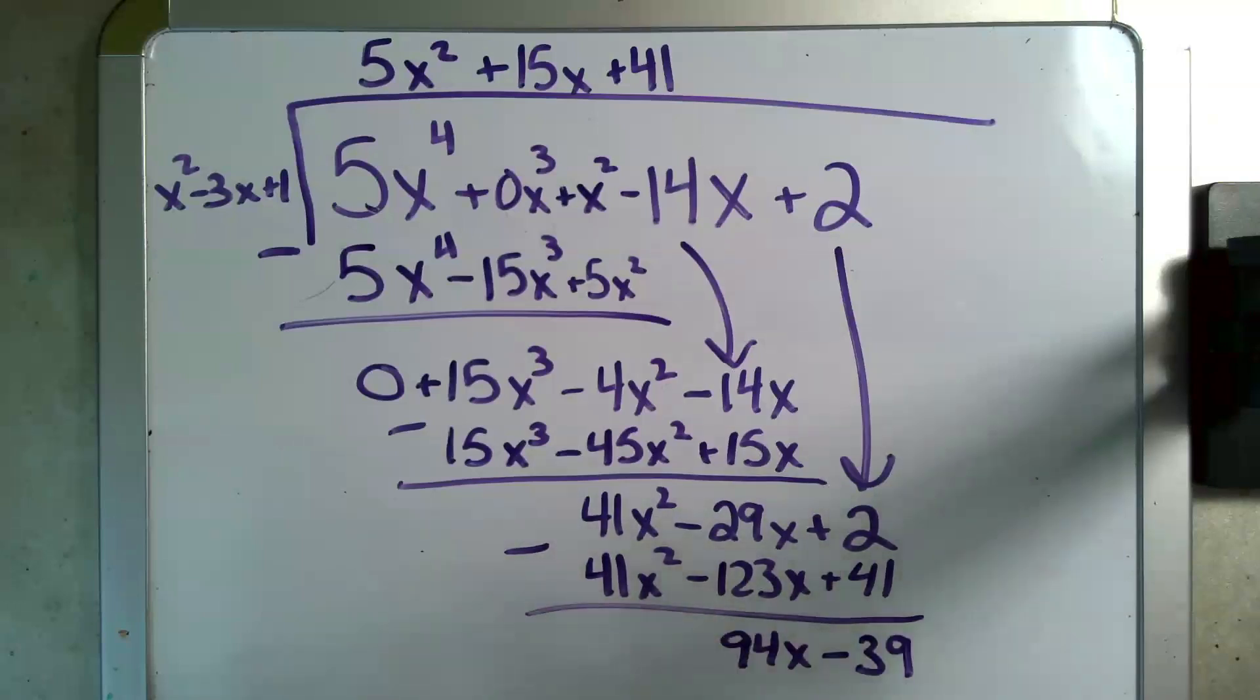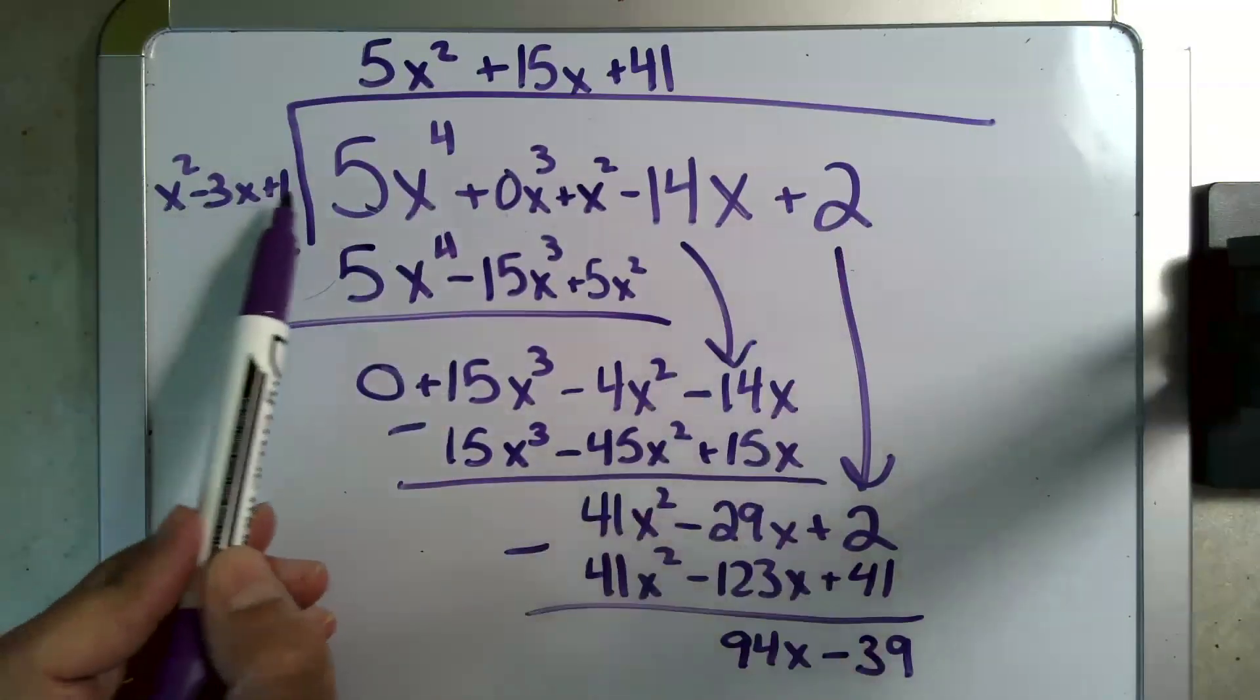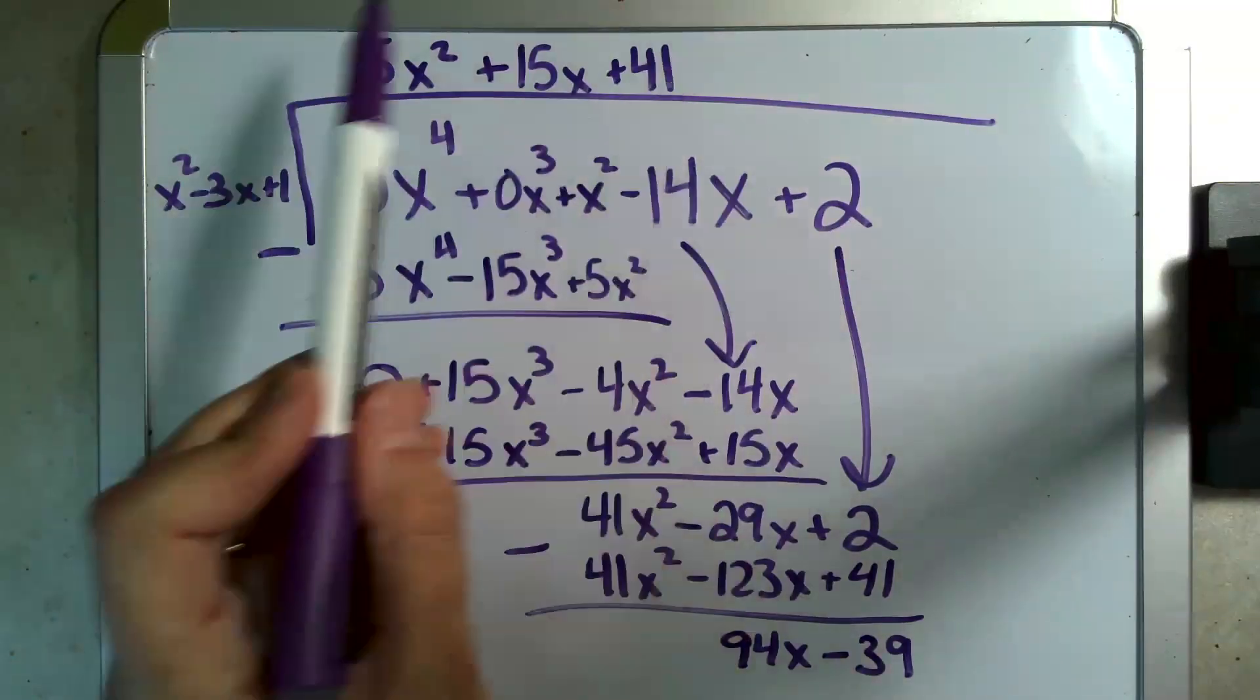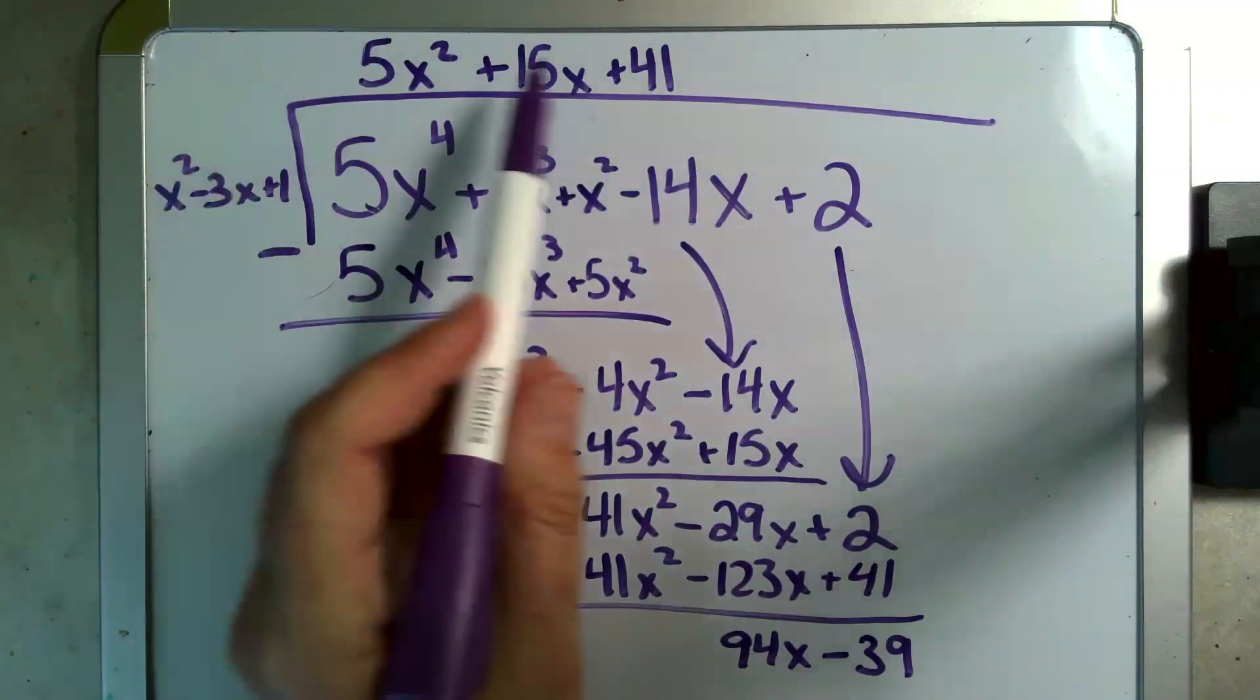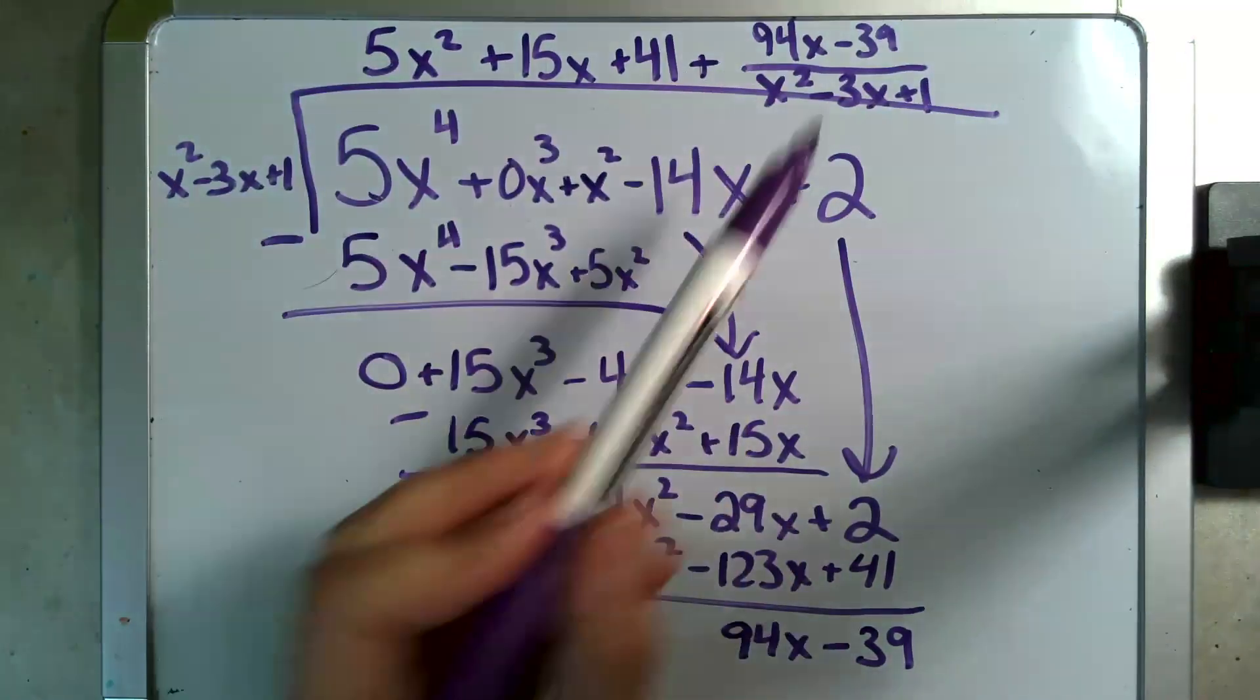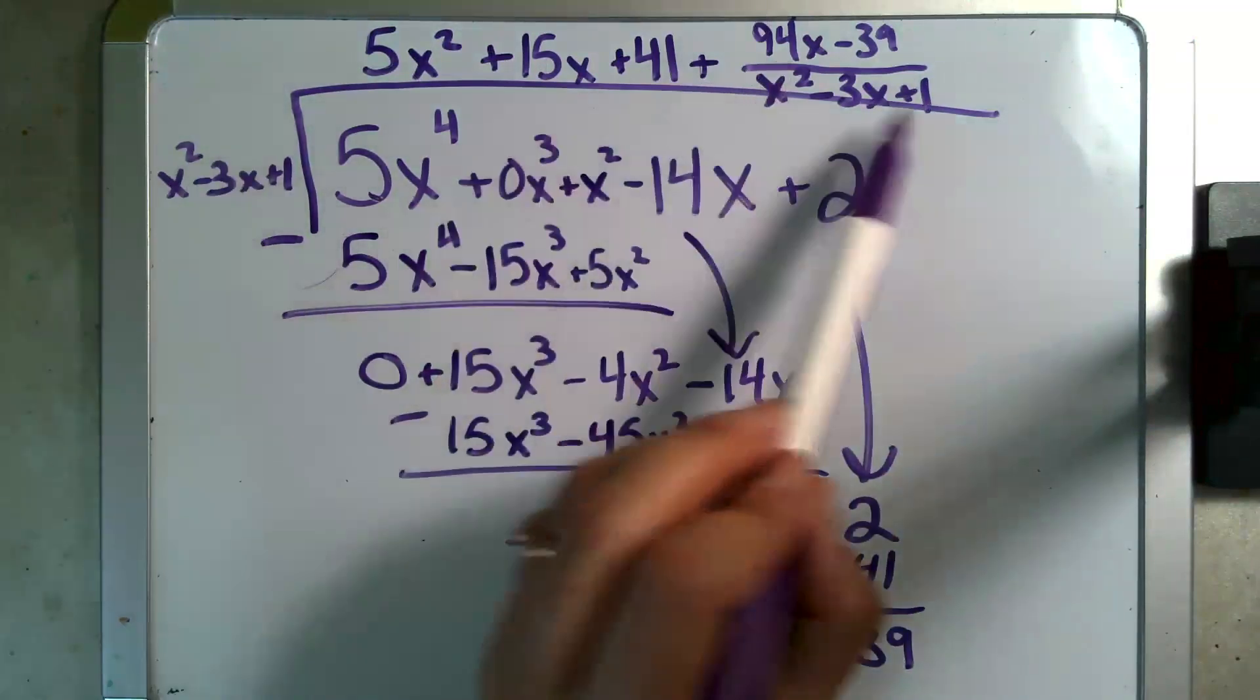And so the answer to the question, this divided by this, is this remainder this, or this plus our remainder divided by what we divided by.